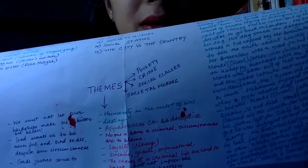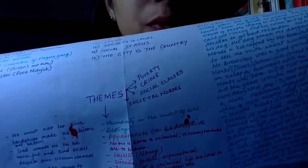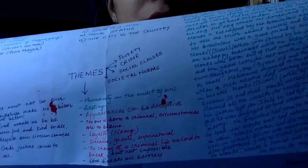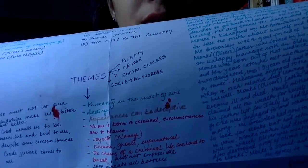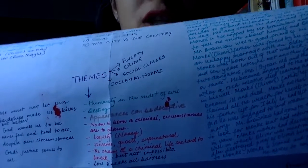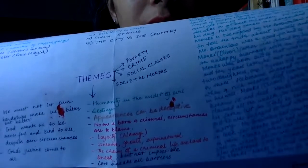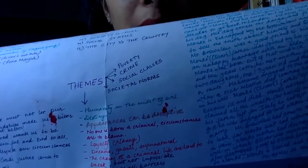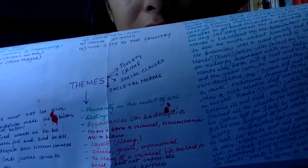Now the themes: poverty is a theme throughout the novel — in Charles Dickens' London, it played a very important role, along with crime and social classes. Societal norms played an important role too. Humanity in the midst of evil is another theme — Mr. Brownlow was humane to Oliver; when everything was going wrong, he pulled Oliver out of that life. Rose Maylee and Mrs. Maylee also helped Rose and Oliver. Then, appearances can be deceptive — we can't trust everyone who pretends to be really nice. For example, Mrs. Mann at the baby farm only pretended to be nice, and Mr. Bumble pretended to be really nice but wasn't.